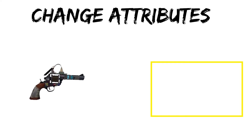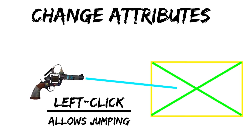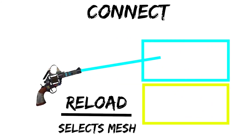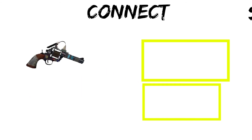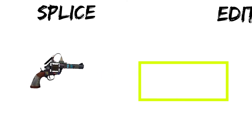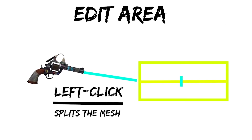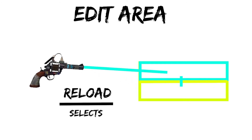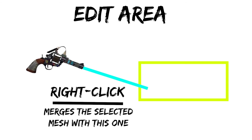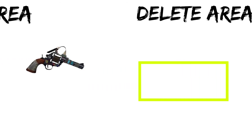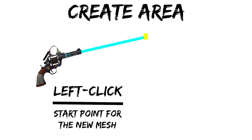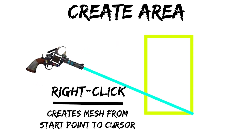For the change attributes tool, left clicking allows jumping and right clicking disallows jumping. For connecting, you reload to select and left click to connect. For splice, you simply right click where it highlights. For edit area, you left click to splice, reload to select, and right click to merge the meshes. For delete area, you just left click. For creating a navmesh, you left click to start and right click to end.